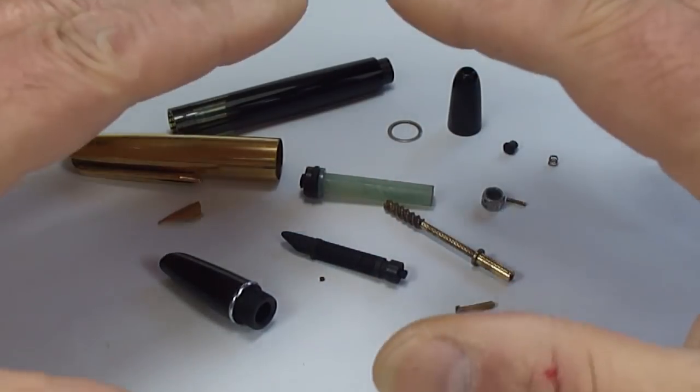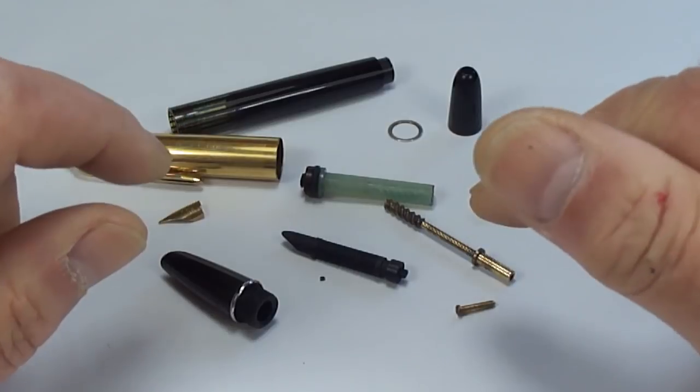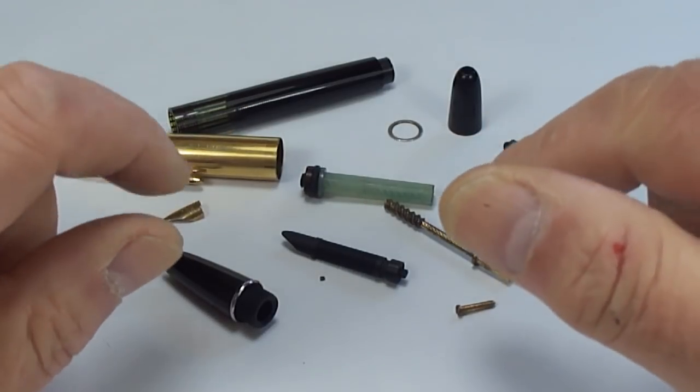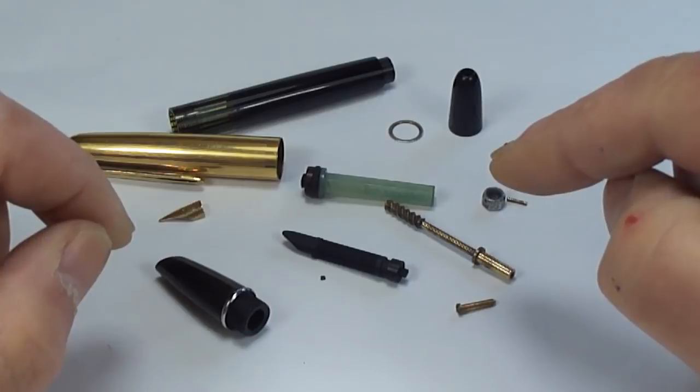Hi guys, Steph here. Right, what we're going to do, we're going to show you this is disassembled. This is an Aurora 88k piston filler fountain pen.